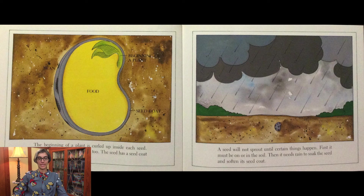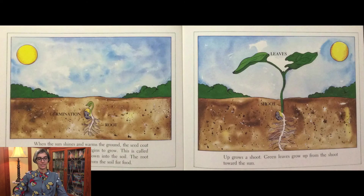A seed will not sprout until certain things happen. First, it must be on or in the soil. Then, it needs rain to soak the seed and soften its seed coat. When the sun shines and warms the ground, the seed coat breaks open and the seed begins to grow. This is called germination.